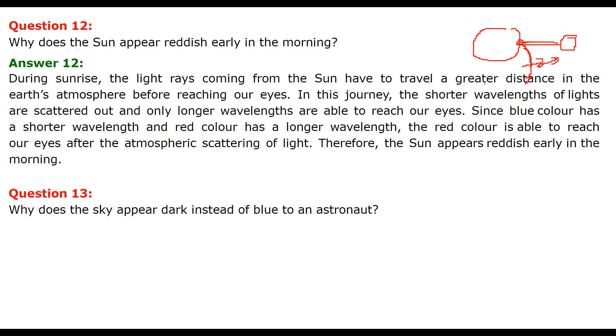During sunrise, the light rays from the sun have to travel a greater distance in the earth atmosphere before reaching our eyes. In this journey, the shorter wavelength of light is scattered out. Only longer wavelength reaches our eyes. Blue color has the shortest wavelength in sunlight and red color has longer wavelength. The red color reaches our eyes even after atmospheric scattering has taken away the blue component. Therefore, sun appears reddish early in the morning and evening.